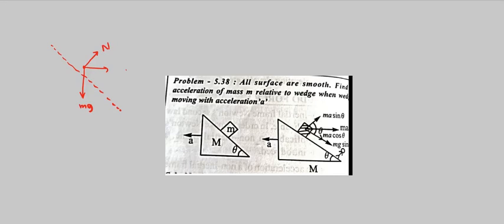Here all surfaces are smooth. Find the acceleration of M relative to wedge when the wedge is moving with an acceleration.